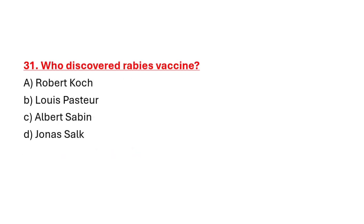Question 31: Who discovered the rabies vaccine? Option A: Robert Koch. Option B: Louis Pasteur. Option C: Albert Sabin. Option D: Jonas Salk. Correct answer is Option B: Louis Pasteur.